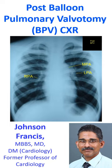Post balloon pulmonary valvotomy X-ray chest PA view showing persistent dilatation of the main pulmonary artery and left pulmonary artery. The right pulmonary artery is not dilated. This is because the jet of pulmonary stenosis is directed towards the left pulmonary artery from the main pulmonary artery, which is more in line with it.